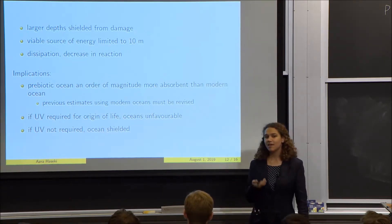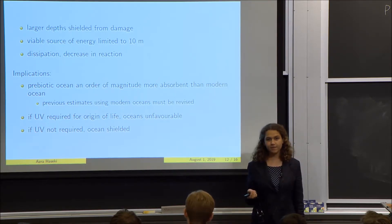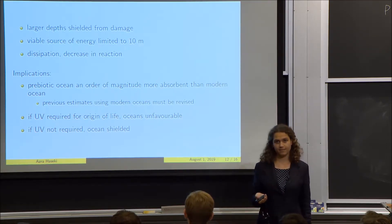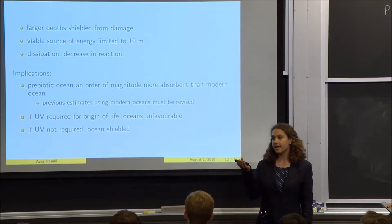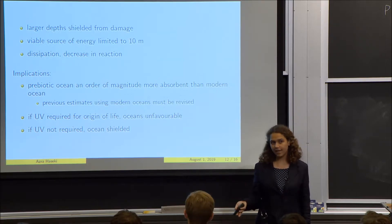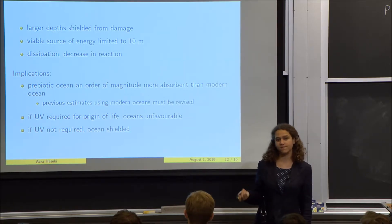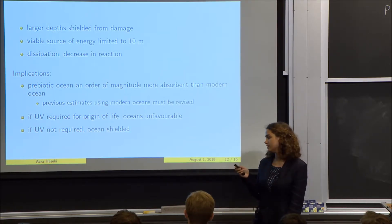However, if UV light was not required for the formation of life, then the oceans would be a good place for it to happen, because anything deeper than 10 meters would be shielded from the adverse effects of UV light.